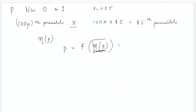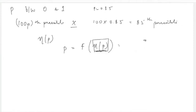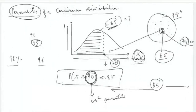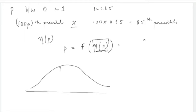The 100×p-th percentile of a continuous random variable X will be a value η_p such that the cumulative distribution function F(η_p) = p. Here η_p is the value of the random variable at which the cumulative area equals p. For the 85th percentile, η_p is the value where the area to its left is 0.85.